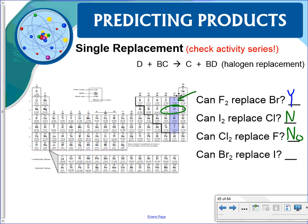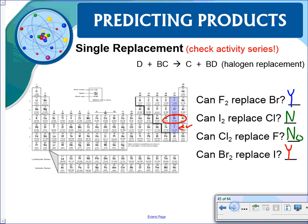Can bromine replace iodine? Yes it can. So the higher-up element on the halogen activity list will be the most active and able to replace elements below it.